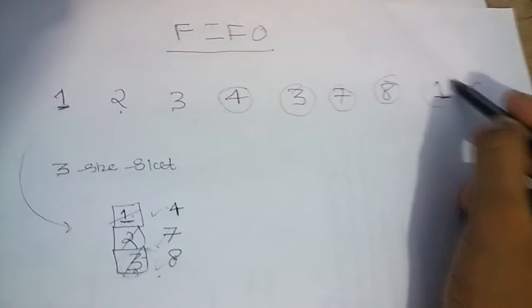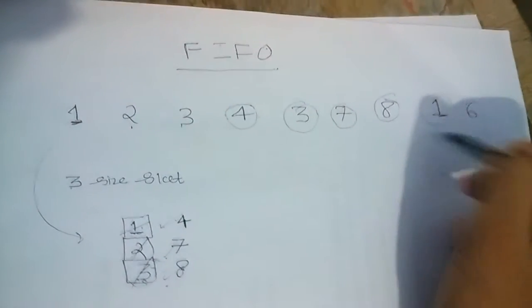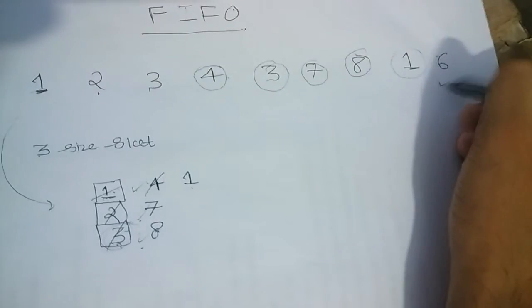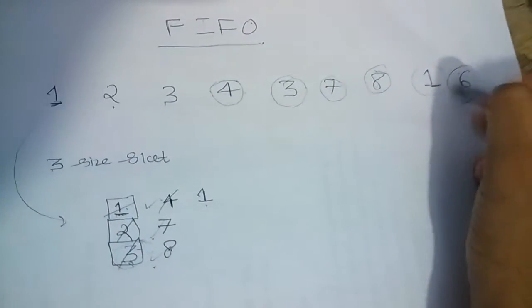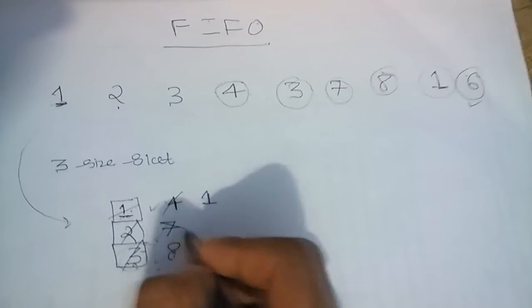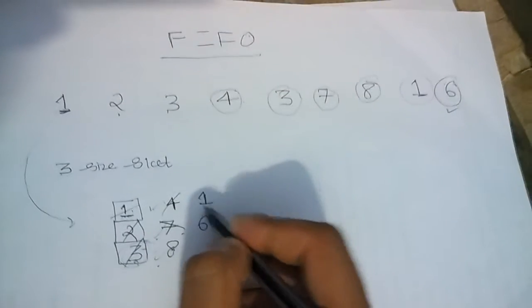Now it turns out process number 1 to come into the memory. We remove the process number 4 and put here 1. It's now turn of the process number 6 to come back. And we remove the 7th number process and put 6th process here.